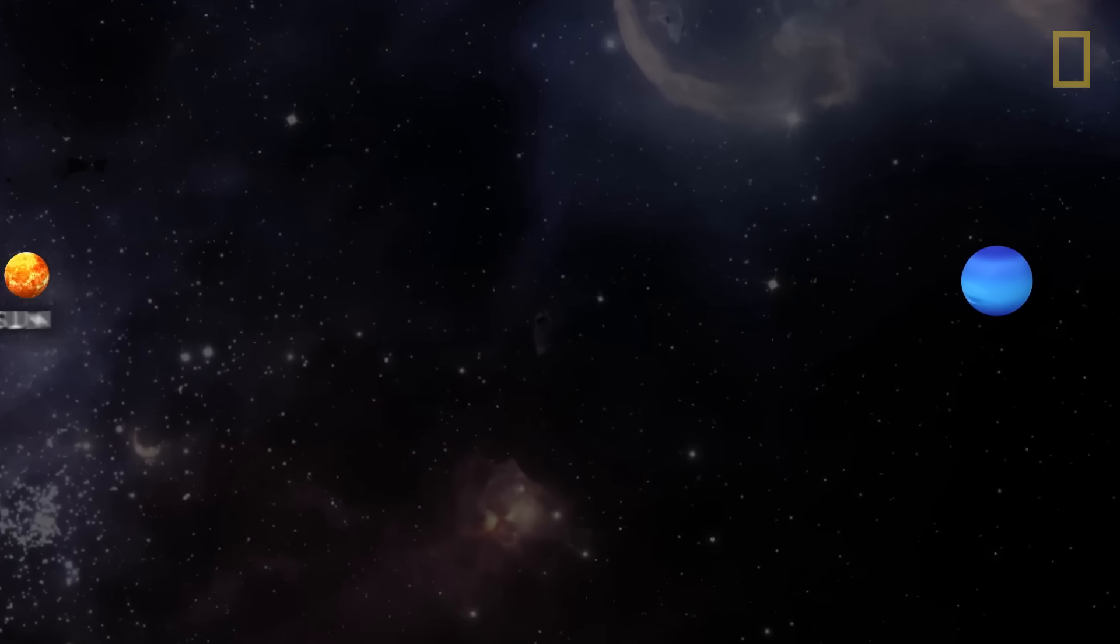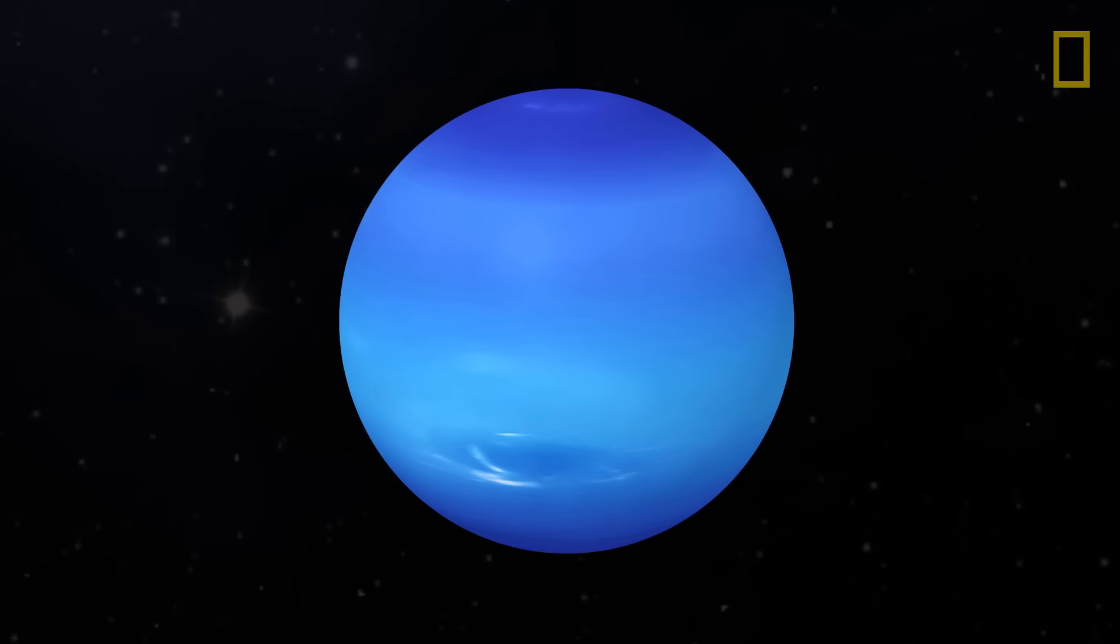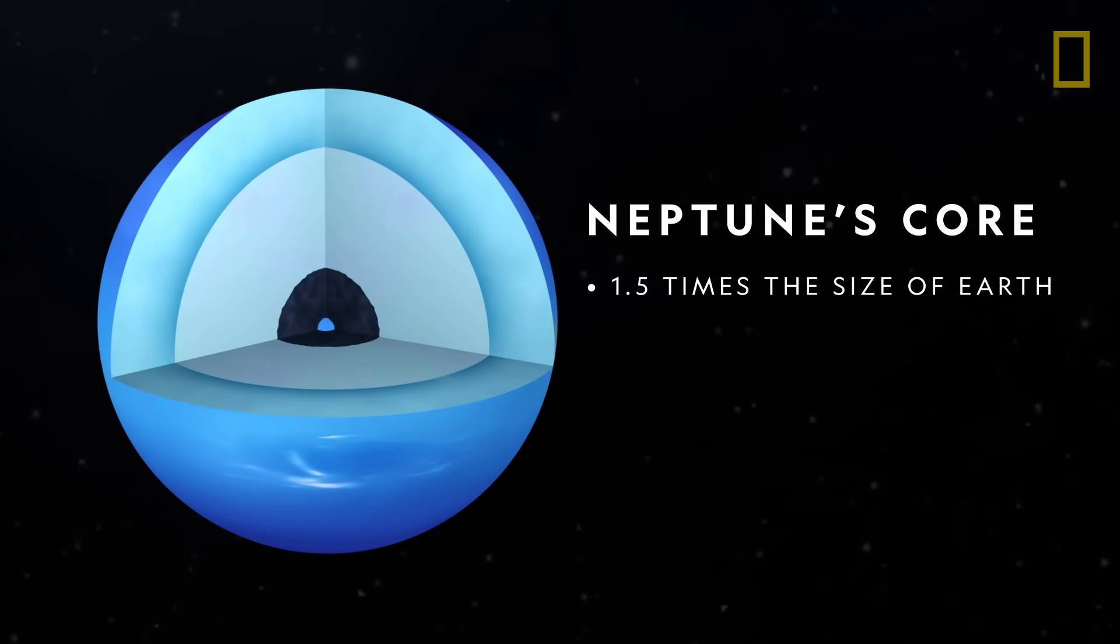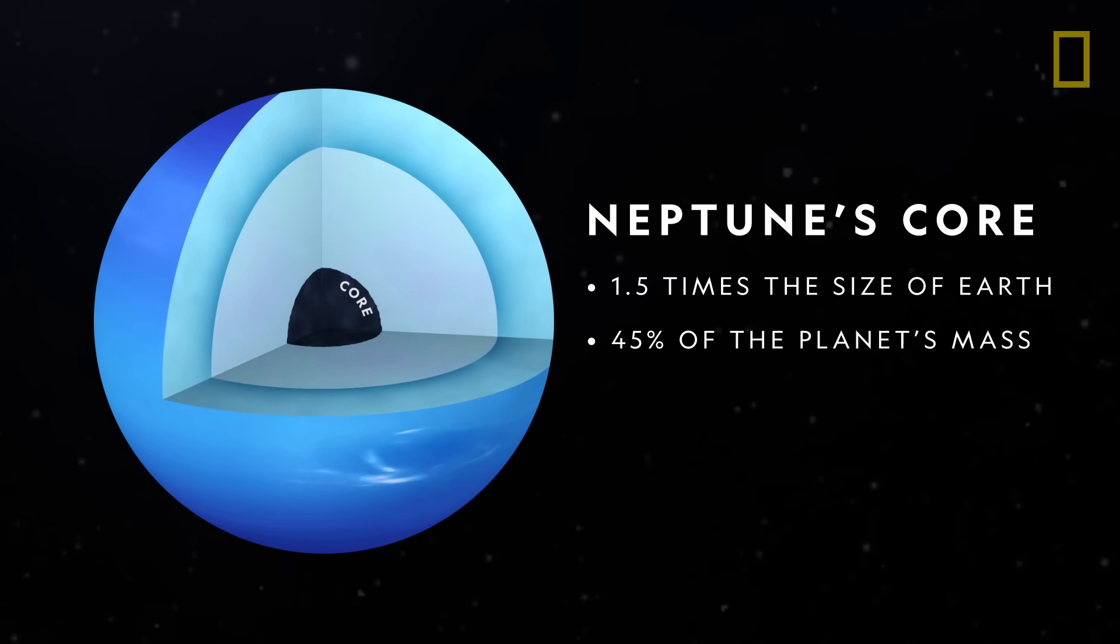Being so far away from the heat and light of the sun, Neptune is cold, dark, and icy. At its heart is a solid core about one and a half times the size of Earth, making up about 45% of the planet's mass. The core is made of water ice and silicate rock.